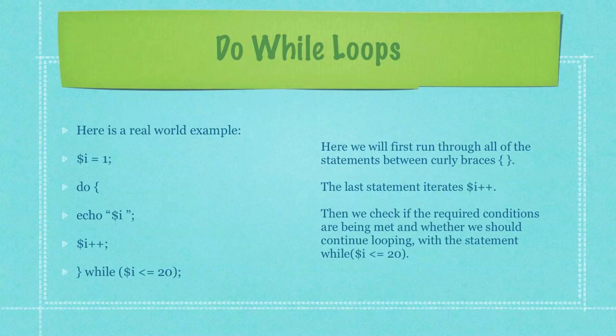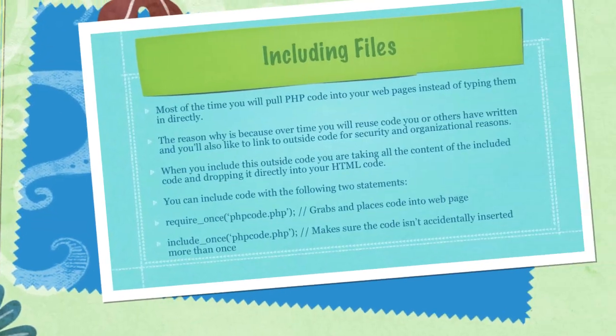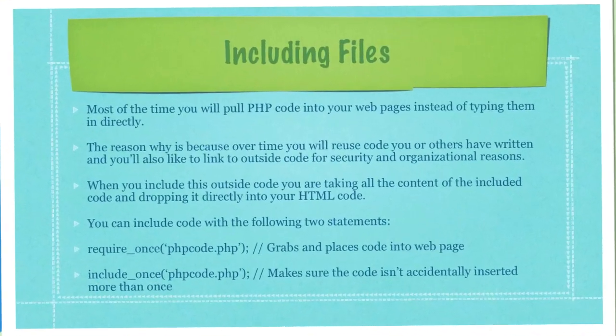The last statement iterates the variable i, and we check if the required conditions are being met, and whether we should continue looping with the statement while, followed by, inside of brackets, the variable i less than or equal to 20.